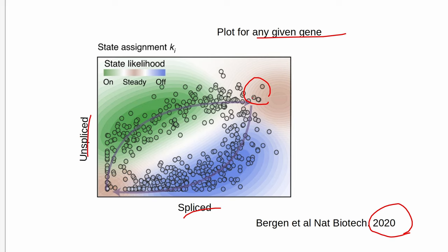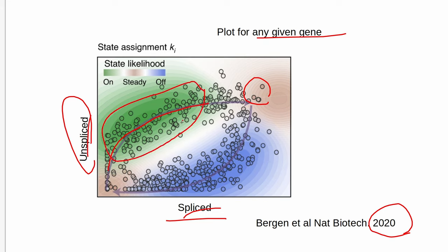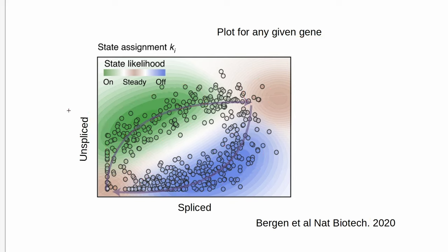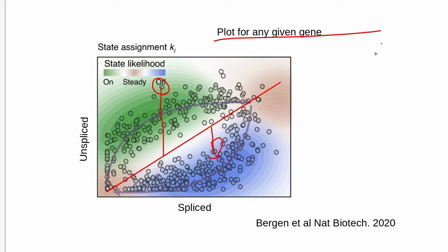scVelo uses a fancy algorithm so that you don't have to make that assumption. To reiterate: if you have a lot of unspliced reads and a low amount of spliced reads, that means a gene is likely being turned on — those cells would have a high positive velocity for that gene. Conversely, if you have a high amount of spliced reads and a low amount of unspliced reads, the gene is likely being turned off. The actual measure of RNA velocity for any given cell is basically just a measure from the center line to wherever that cell falls.